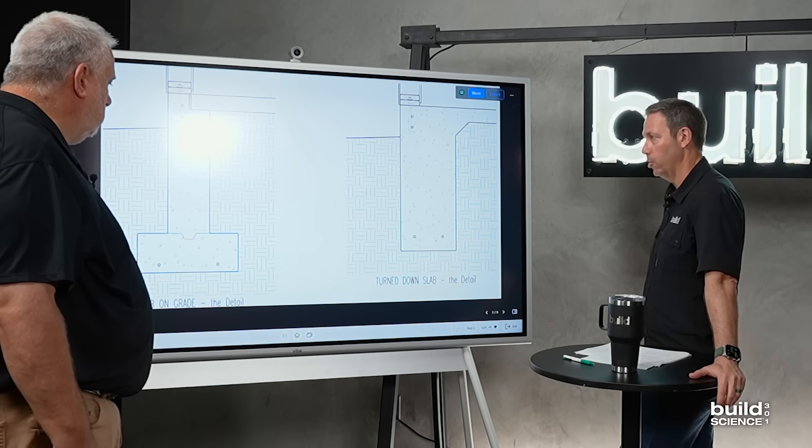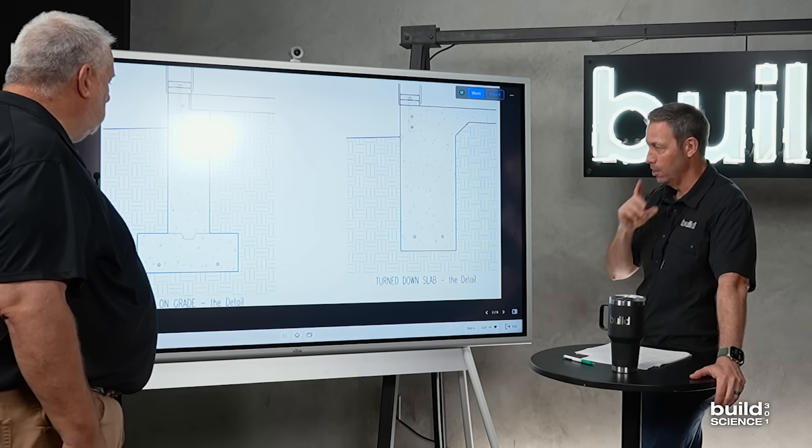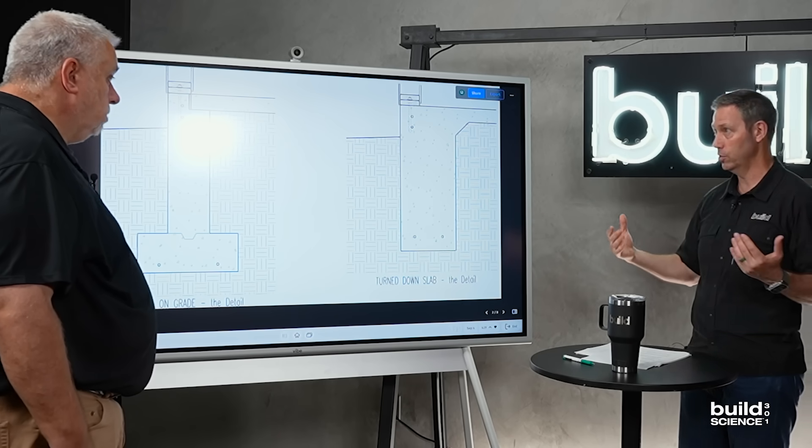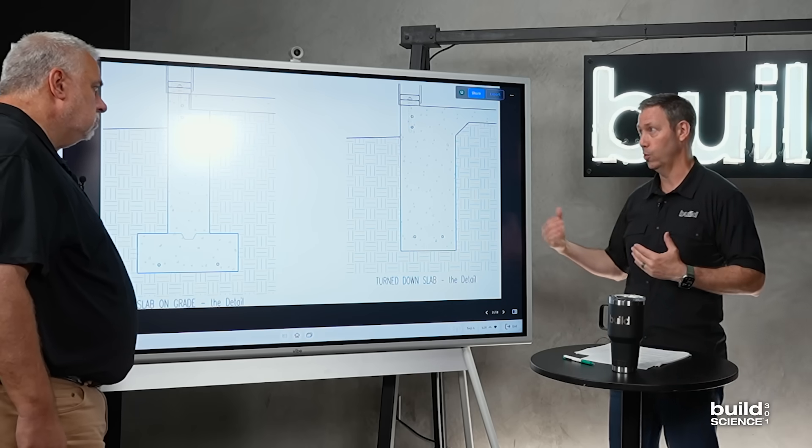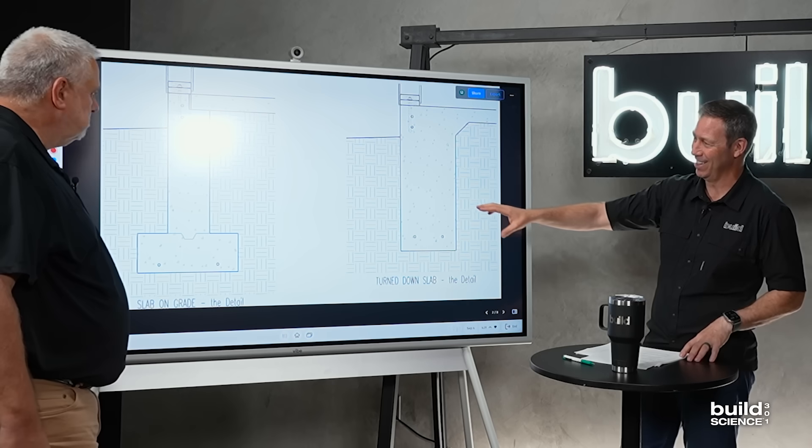On the other hand, the slab-on-grade that's more of a deeper footing like you see there, we typically see that in areas where we've got a frost line that's 12 inches, 24 inches, 36 inches. So it depends a little bit. A lot of the south, I'm in climate zone 2 in Texas, we don't have a lot of frost or freeze-thaw. We don't have it, so I don't think about it.